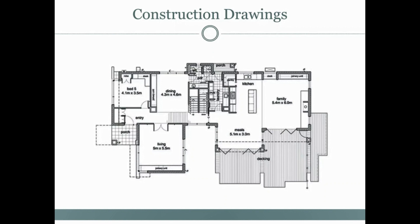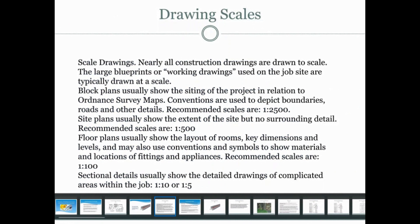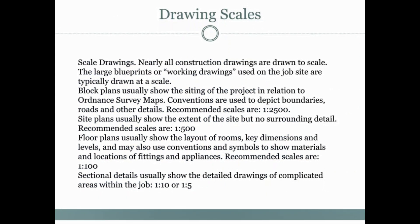Now that we understand construction drawings, we need to understand what drawing scales are. Sectional details show the detailed drawing of complicated areas within the job. What is on paper and what is on site can be quite different, so we use drawing scales — for example, 1 to 10 or 1 to 5. Nearly all construction drawings are drawn to scale. Block plans usually show the siting of the project in relationship to Ordnance Survey maps.